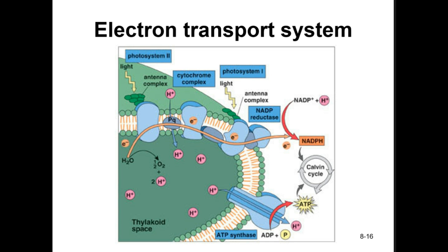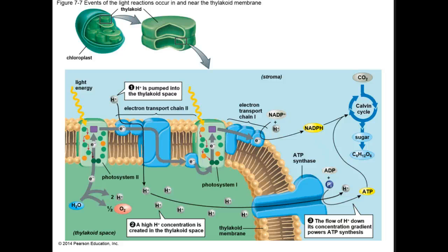This is a close-up of the electron transport chain showing the series of protein carriers in the thylakoid membranes which carry the electron through the chain. This generates a proton gradient that activates an enzyme to make ATP. The process of using a proton gradient to drive ATP synthesis is called chemiosmosis, and it occurs in three steps.